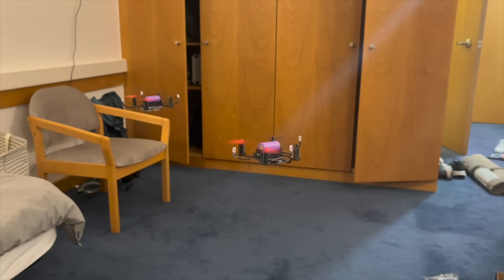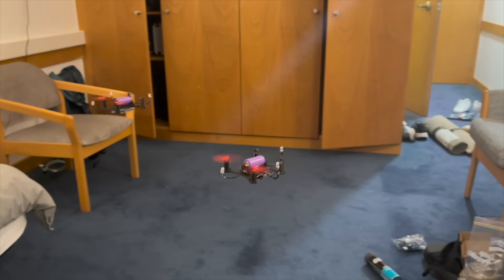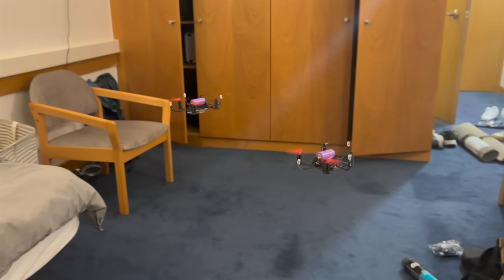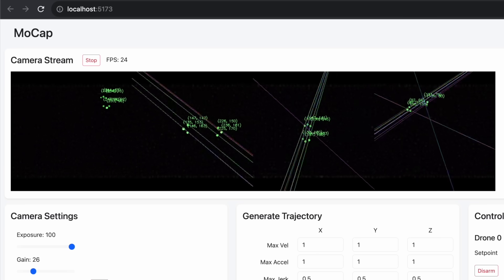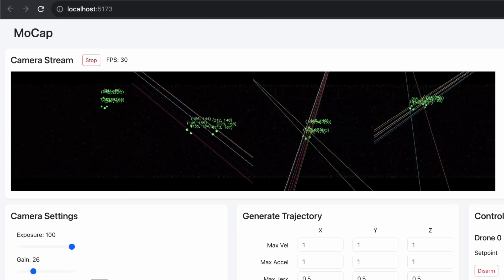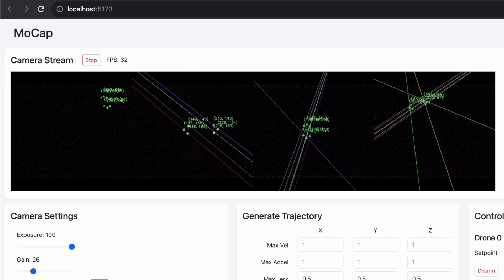The motion tracking system is capable of tracking multiple points at the same time. Here you can see two drones being localized, each one having three infrared markers. Looking at the raw camera view, you can begin to understand how hard it is to triangulate these six points when they are so close to one another.